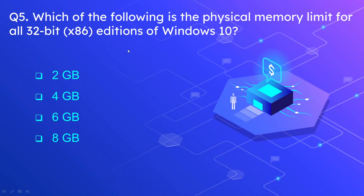Question number five: which of the following is the physical memory limit for all 32-bit x86 editions of Windows 10 — meaning their RAM limitation? The options are 2 GB, 4 GB, 6 GB, and 8 GB. The answer is 4 GB. The 32-bit Windows 10 edition is limited to only 4 GB RAM.